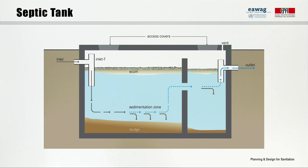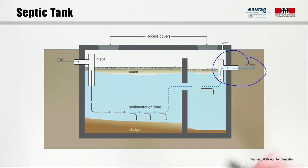The septic tank is among the most widespread on-site sanitation technologies. There are two important things to know about the septic tank. First, it is a watertight tank, typically made of reinforced concrete, polyethylene or fiberglass. And second, it has an outlet through which the clarified effluent leaves the tank. In practice, people are not always aware of those two aspects — they may even call an open bottom pit a septic tank, which is actually wrong.